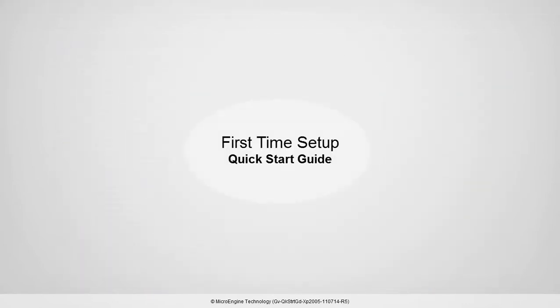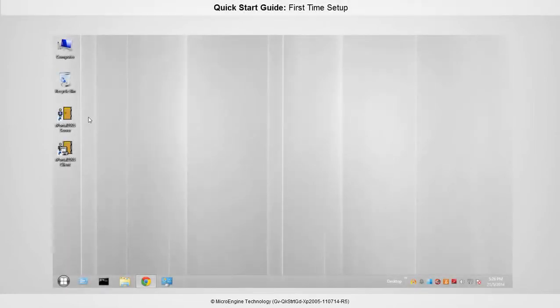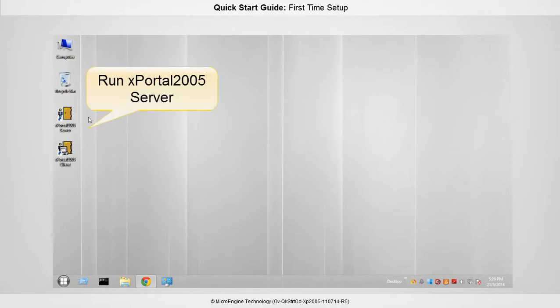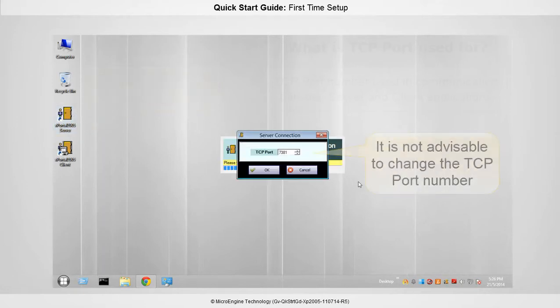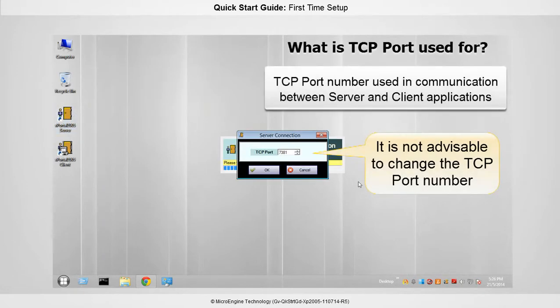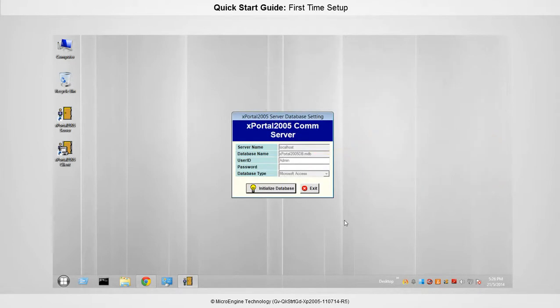In this step, you are going to initialize a new database. Run your X-Portal 2005 server. This port number is for communication between server and client. Click OK. Click Initialize Database to create a new database.